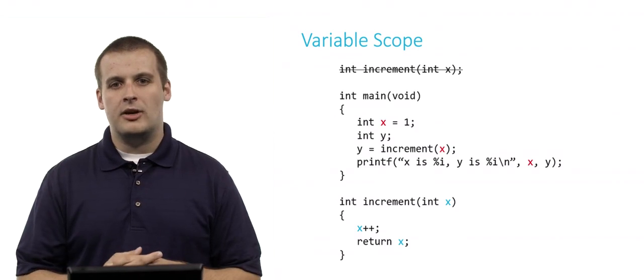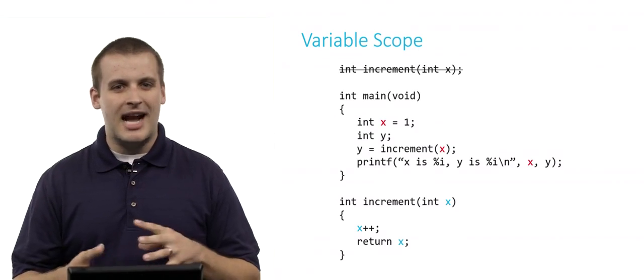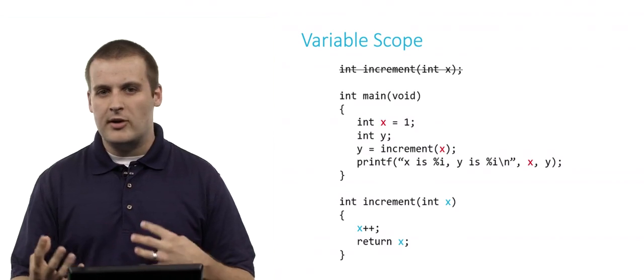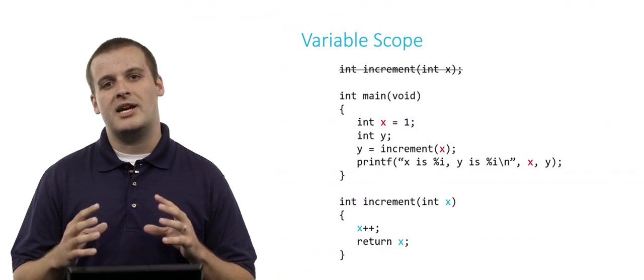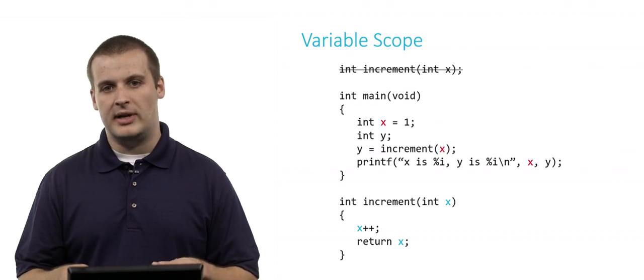All right, hopefully you've taken a few seconds to try and parse this one out. Let's do it together. So I've crossed out increment declaration at the top there. It was kind of a distraction. It's not its own variable. It doesn't have its own scope. It's just a function declaration. So for purposes of trying to parse out what's happening in this program, we might as well just avoid it.